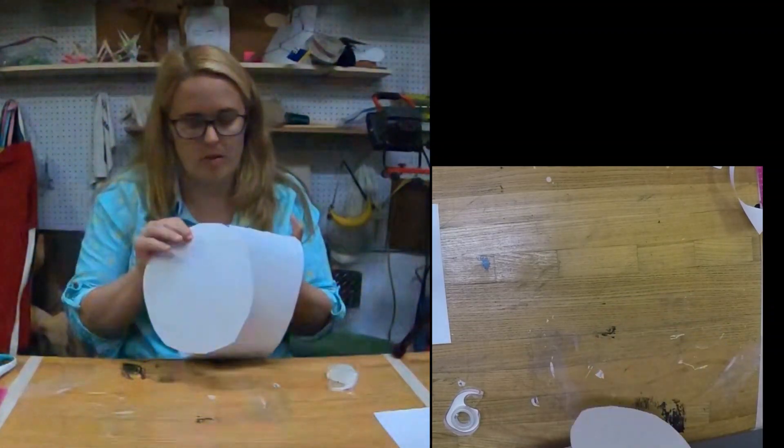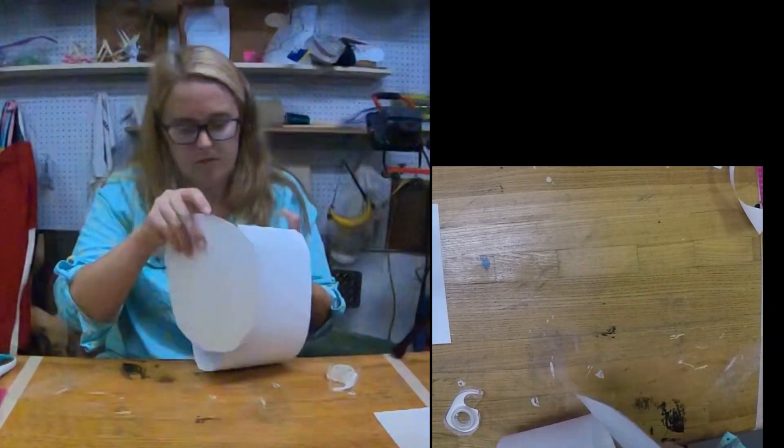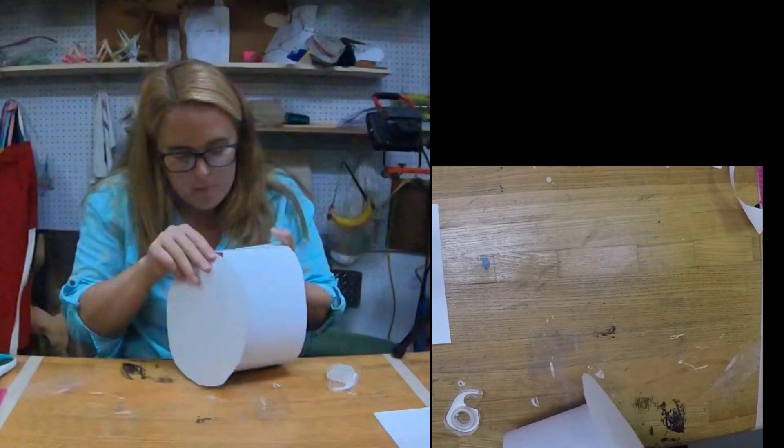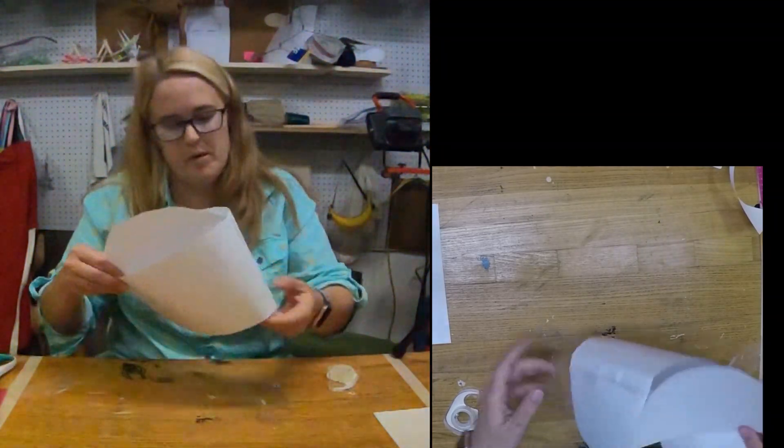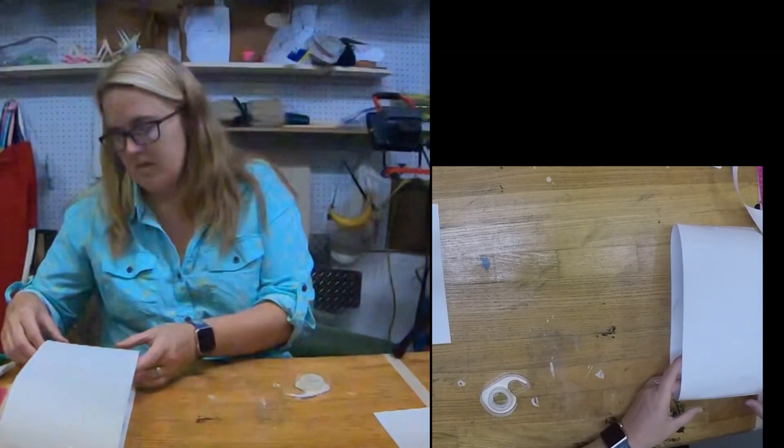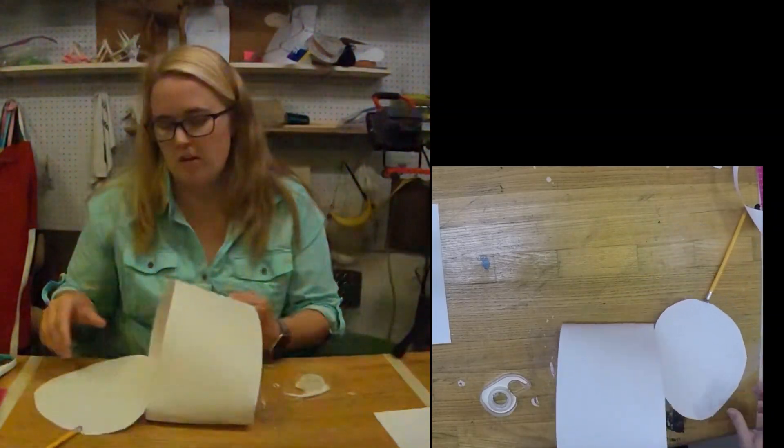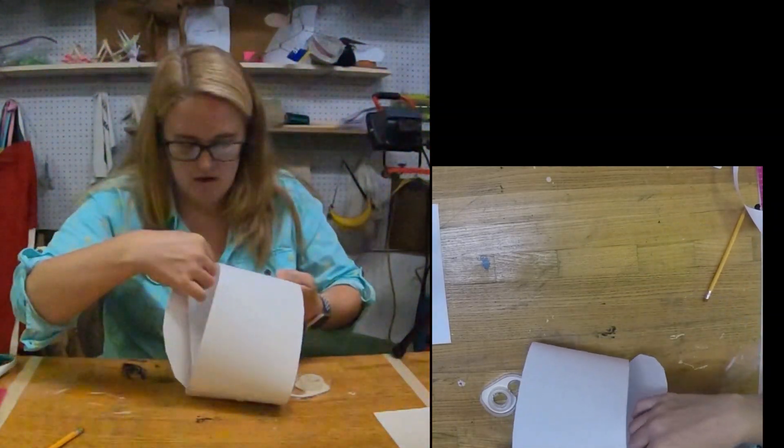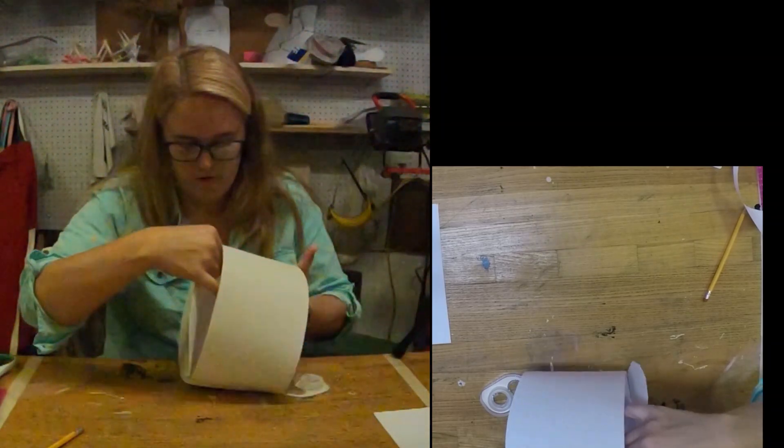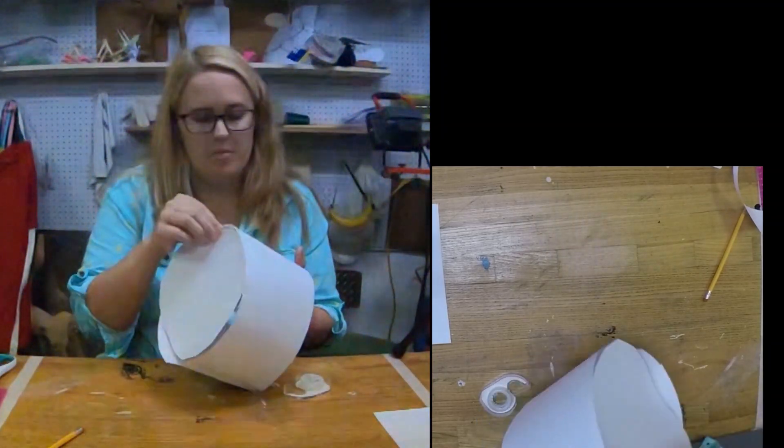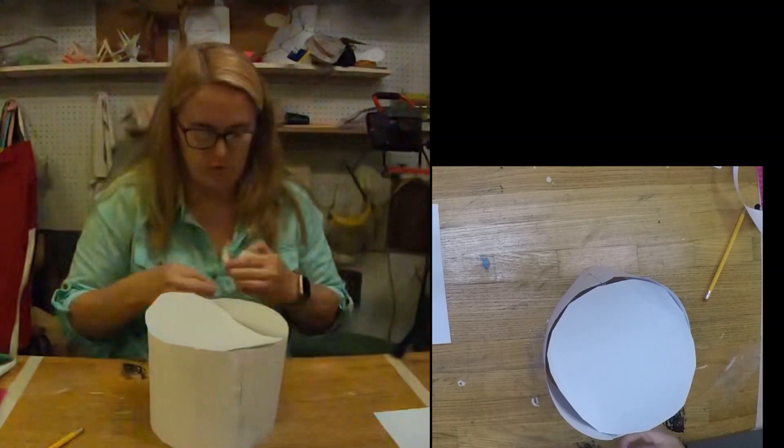Now, this is maybe the one time my double-sided tape is going to be an asset. I'm going to put my tape on the inside now. See how my paper is flopping? This is why it would be nice to have cardboard for this. But, don't worry. It'll still work.